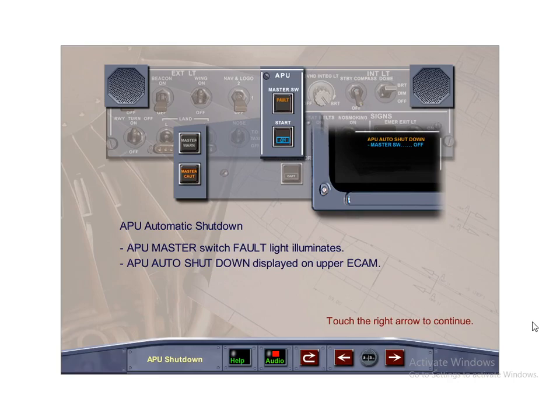As long as AC power is connected to the aircraft, a single chime sounds, the master caution lights illuminate, and the fault light on the APU master switch illuminates. The ECAM message APU auto shutdown is displayed on the upper ECAM.